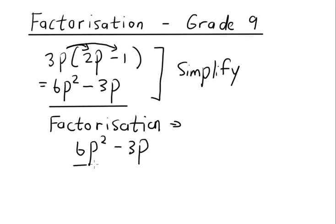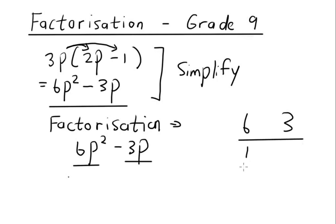First we identify how many terms we have — we've got 1, 2 terms. A term is separated by a plus or minus. For example, 3p multiplied by 2p minus 1 is one term because it's attached to a bracket. But in this case you've got two terms. So what we do is take out the highest common factor of the number first. The highest common factor between 6 and 3 — the factors of 6 are 1, 2, 3, and 6, whereas the factors of 3 are 1 and 3. So the highest common factor is 3, because that's the highest number found in both sets of factors.